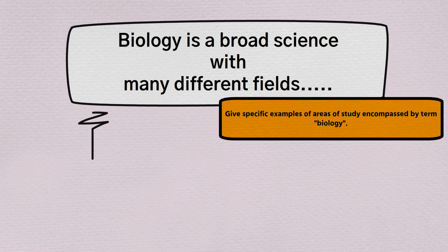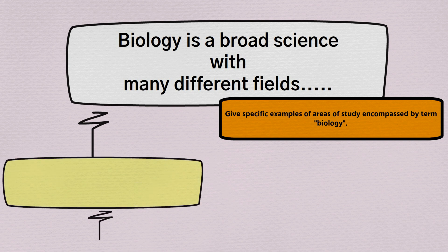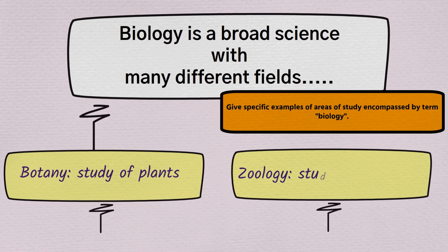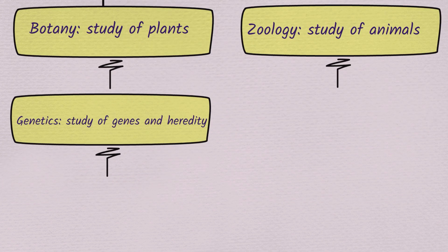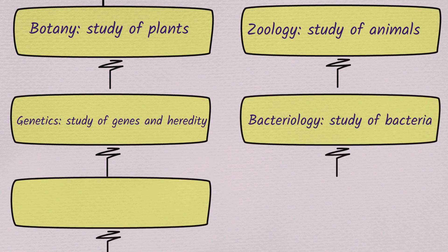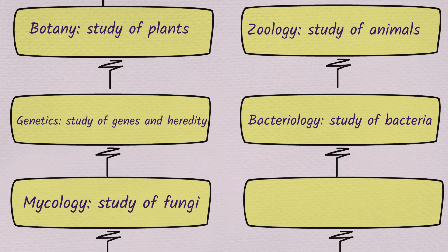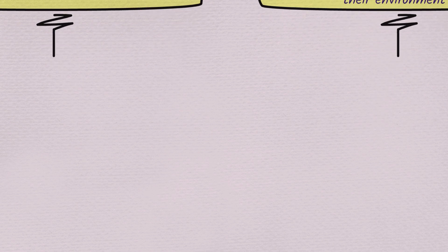Here are a few examples, though there will be others in your book. Botany is the study of plants, zoology the study of animals, genetics the study of genes and heredity, bacteriology the study of bacteria, mycology the study of fungi, and ecology the study of the interactions between organisms and their environment.